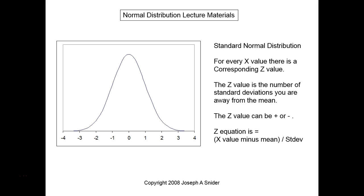This is called the standard normal distribution. It looks like a bell curve. The things on the horizontal axis here, the minus 4 to plus 4, those are called Z scores. Those are calculations based upon the X value.